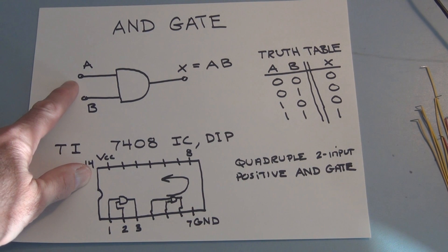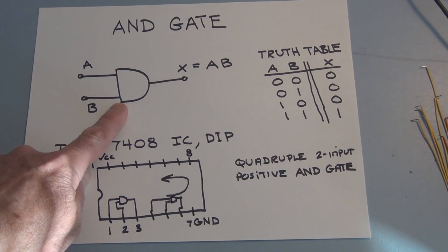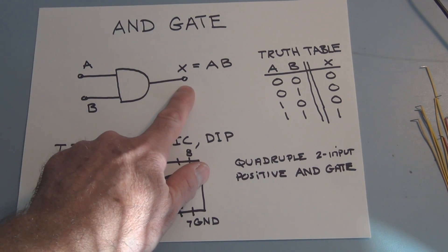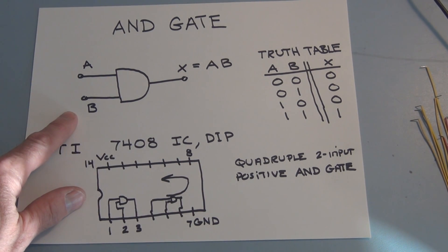Here we have the symbol for an AND gate, and we have an input A, an input B, and output X. Either of these two inputs can have a zero or a one applied to it, or zero and plus five volts.